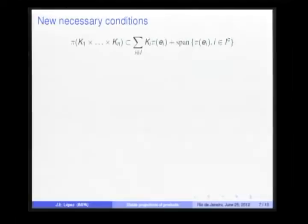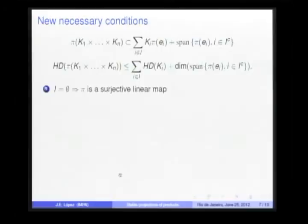We're looking for other necessary conditions. Note the following relation. By linearity of the projection, we have this relation, where e₁ to eₙ is the canonical basis of ℝⁿ, and A is any subset of the set of indices from 1 to n. So again, applying Hausdorff dimension in both sides, this implies this inequality.